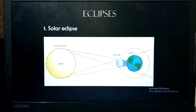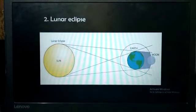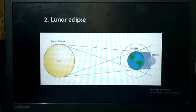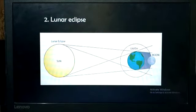Let's move to the next eclipse, that is lunar eclipse. Students, we all know the moon does not have its own light. It shines because its surface reflects the sun rays.